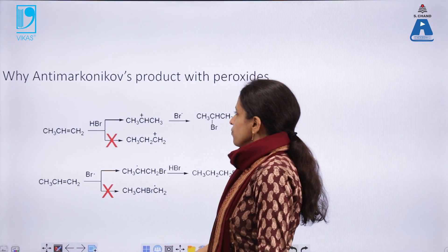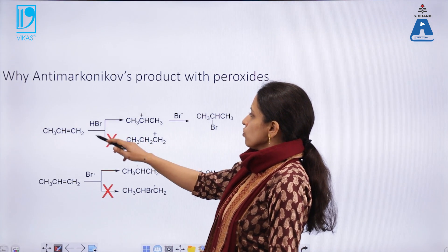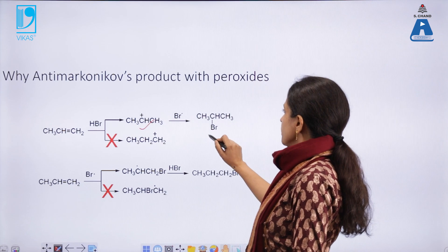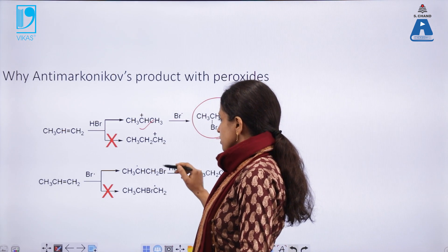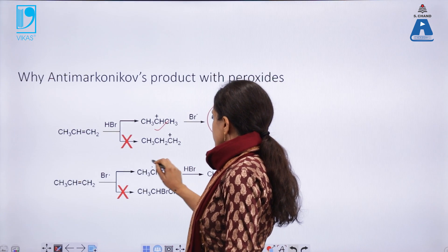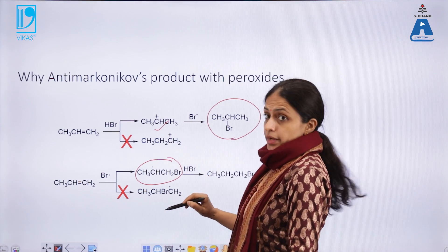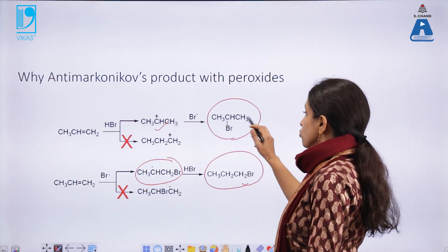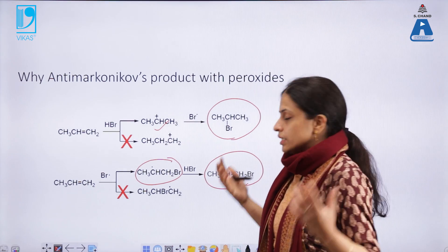If we compare these two reactions with HBr and the Br radical, you know that the intermediate with HBr is a carbocation. So you have to have a more stable carbocation, and hence 2-bromopropane is the product. However, if the reaction happens with the Br radical, Br attaches itself first and the intermediate is an alkyl radical. In this case, a secondary alkyl radical will be more stable. Here, obviously, the preferred product is 1-bromopropane, not 2-bromopropane. That is how we get different products with different reaction conditions in addition reactions.